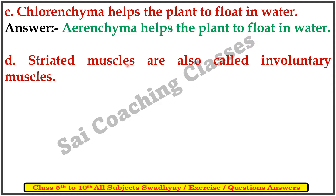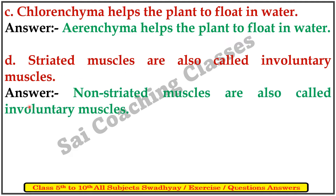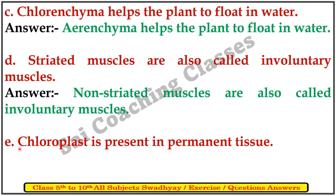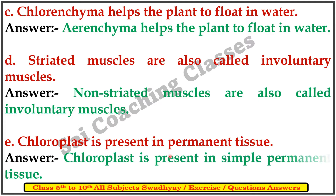D. Striated muscles are also called involuntary muscles. Answer: Non-striated muscles are called involuntary muscles. E. Chloroplast is present in permanent tissue. Answer: Chloroplast is present in simple permanent tissue.